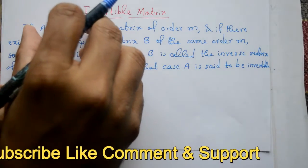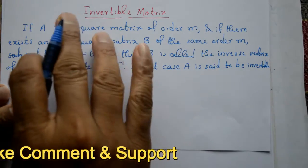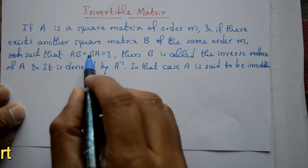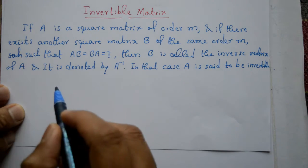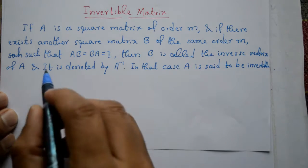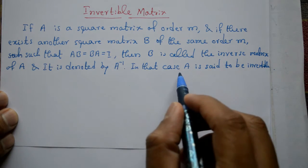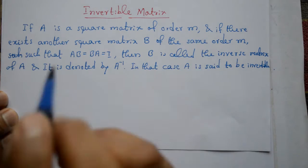Iska matlab hai, ek matrix A hai, ek matrix B hai, uska same order hona chahiye. Agar A into B and B into A dono I aega, iska matlab hai B is called the inverse of A. So is case mein A is said to be invertible.